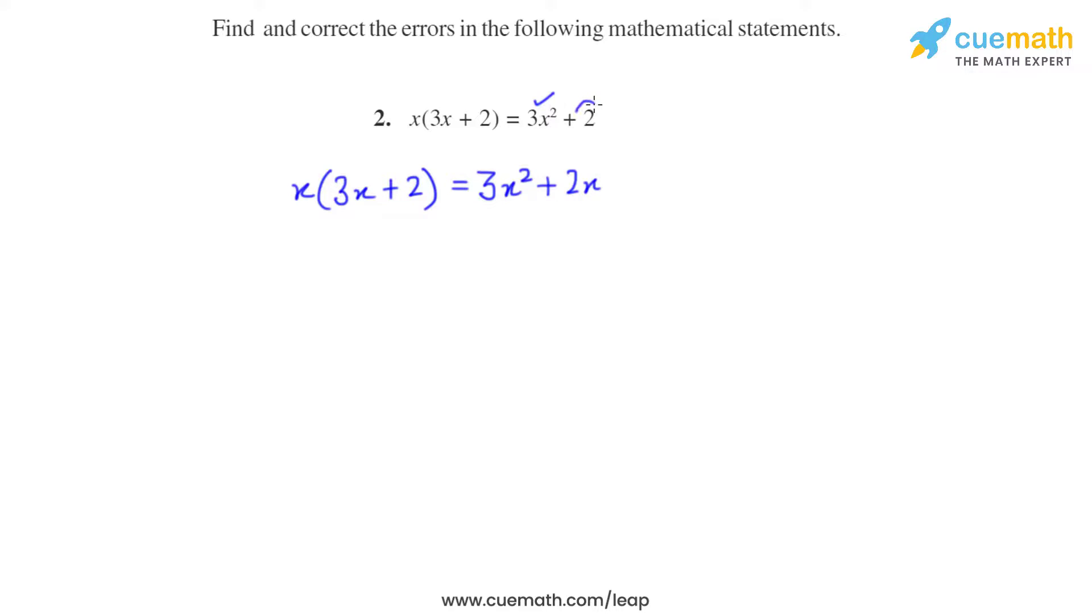So instead of 2, it should be 2x. So the correct answer should be 3x squared plus 2x.